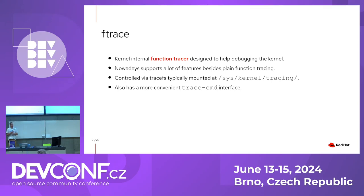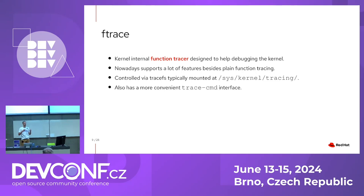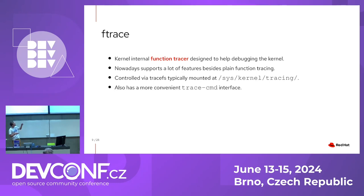Ftrace is a kernel internal function tracer which was originally designed to help kernel engineers debug the Linux kernel, but these days it's usable for tracing the kernel as well. It supports a lot of features besides plain function tracing. One disadvantage is that the interaction is a bit complicated if you're not a kernel engineer. Normally you interact with ftrace through the so-called tracefs — a pseudo filesystem typically mounted at /sys/kernel/tracing — by writing and reading files mounted there.